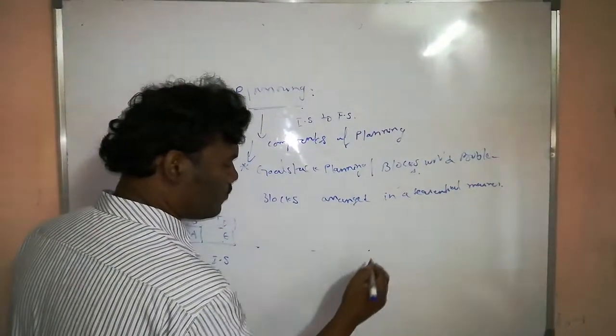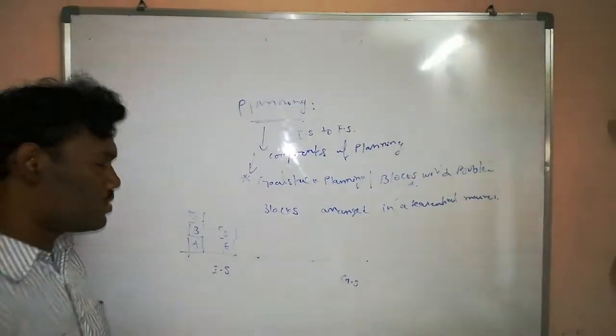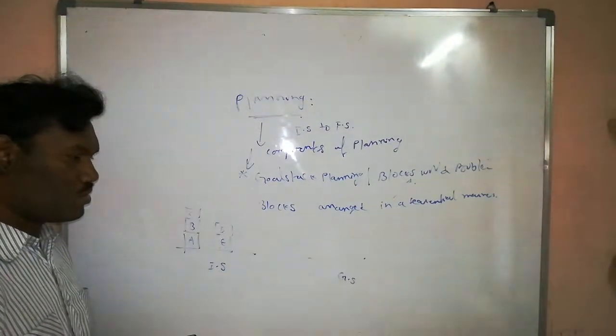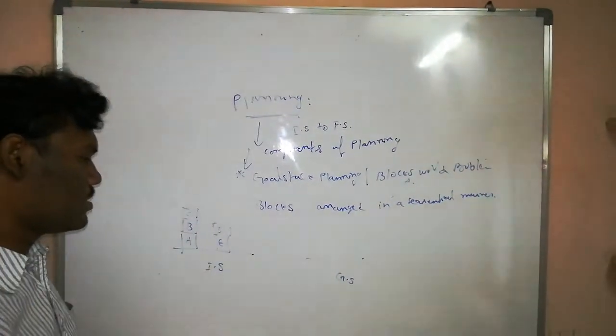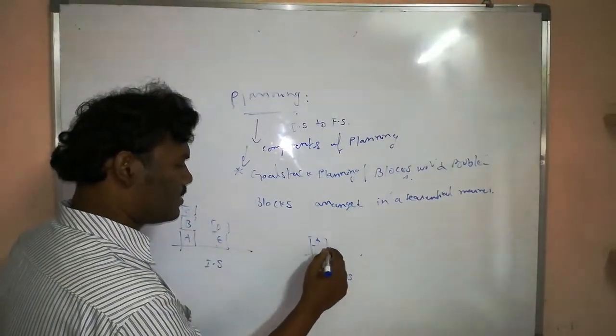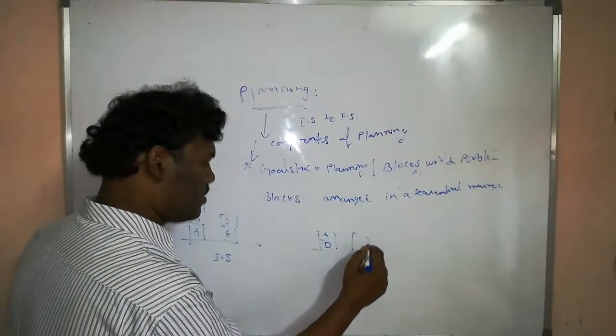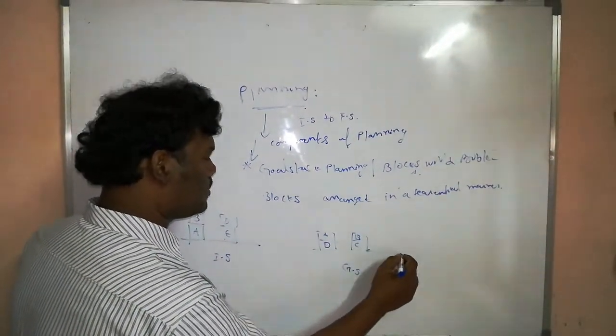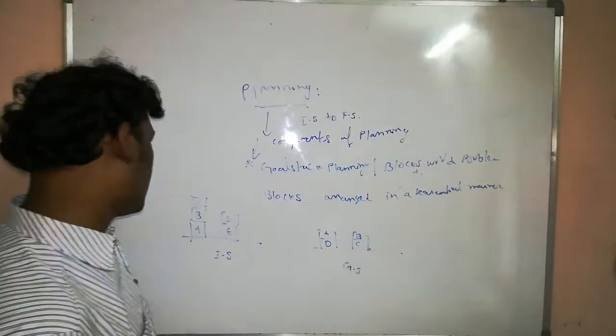In the case of goal state, we are arranging these blocks into some set of blocks. For example maybe, here I write like this A, D and these are the B, C and these are the E.